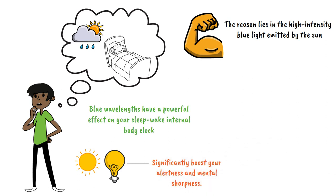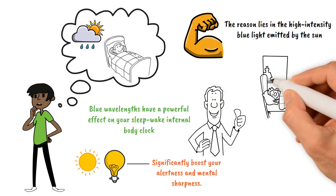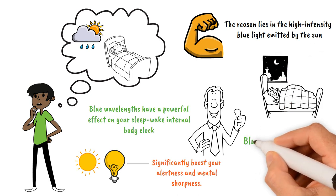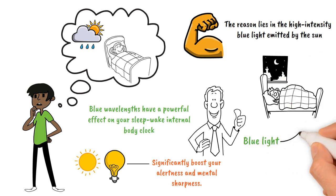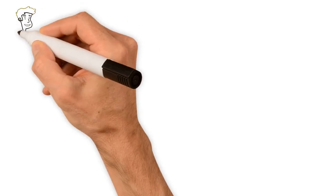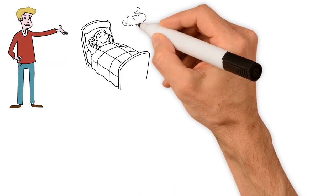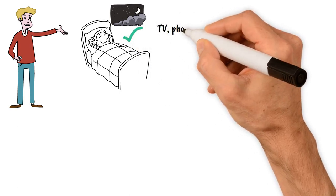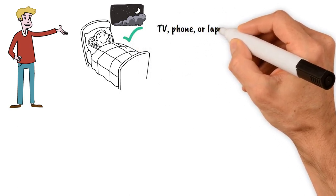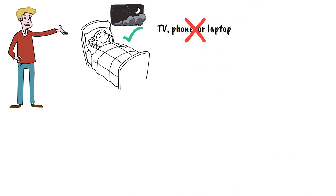While this can be beneficial during the day when you want to stay awake and focused, it becomes counterproductive when you're trying to have a good night's sleep. Blue light interferes with your body's ability to prepare for sleep by blocking the release of the hormone melatonin, which is responsible for making you feel sleepy. To ensure a restful night's sleep, it's a good idea to minimize exposure to blue light sources such as your TV, phone, or laptop at least one hour before going to bed. By doing so, you give your body the chance to naturally produce melatonin and ease into a peaceful sleep at your desired time.